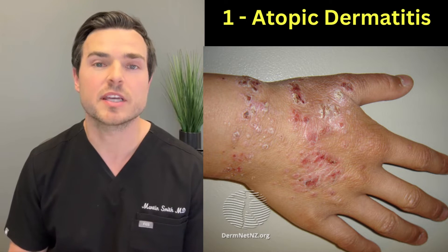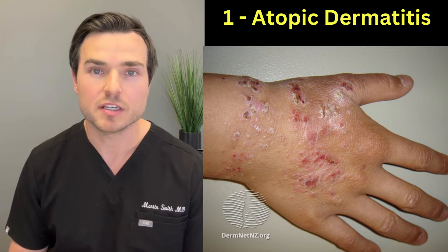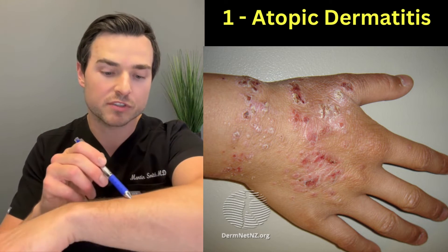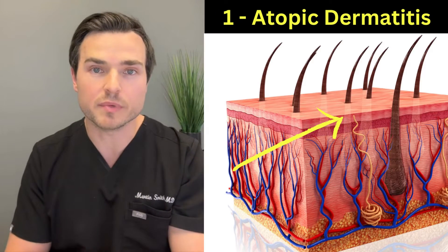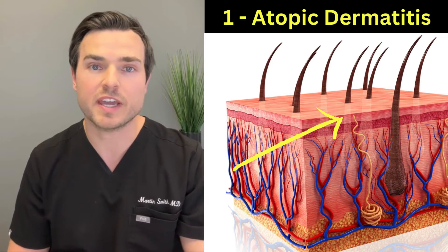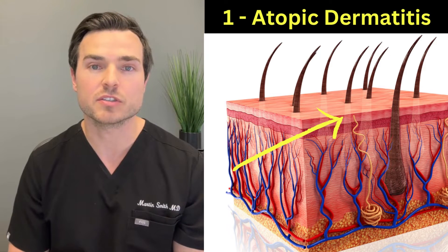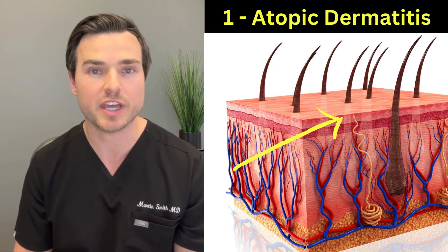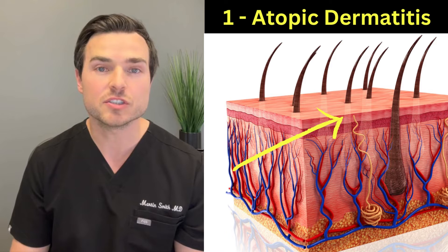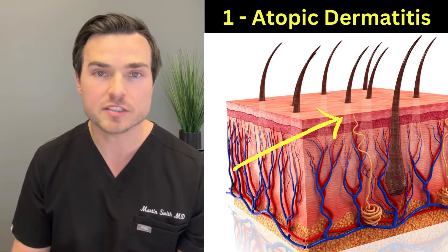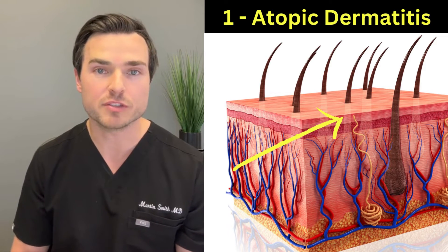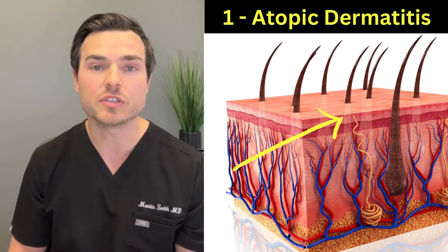Atopic dermatitis stems from barrier dysfunction. Your skin barrier is the topmost layer of your skin called the stratum corneum. There are several proteins and fats in that layer, and certain genetic conditions cause a decrease or alteration in the ratio of these proteins and fats. This leads to something called increased transepidermal water loss — water evaporation from the stratum corneum, or your skin barrier.